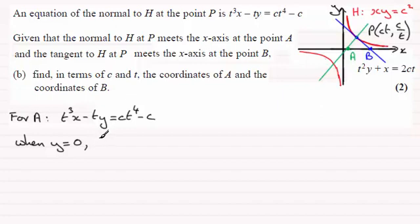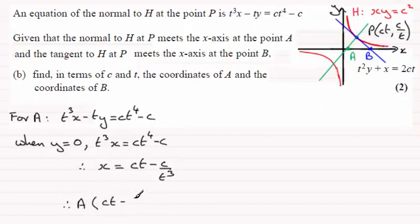And when y equals 0, what we've got is t cubed x equals ct to the power 4 minus c. So therefore, if we divide through by t cubed, x equals ct minus c over t cubed. And that means that the coordinates for A will be ct minus c over t cubed for x and the y coordinate will be 0. Okay, so that's A.